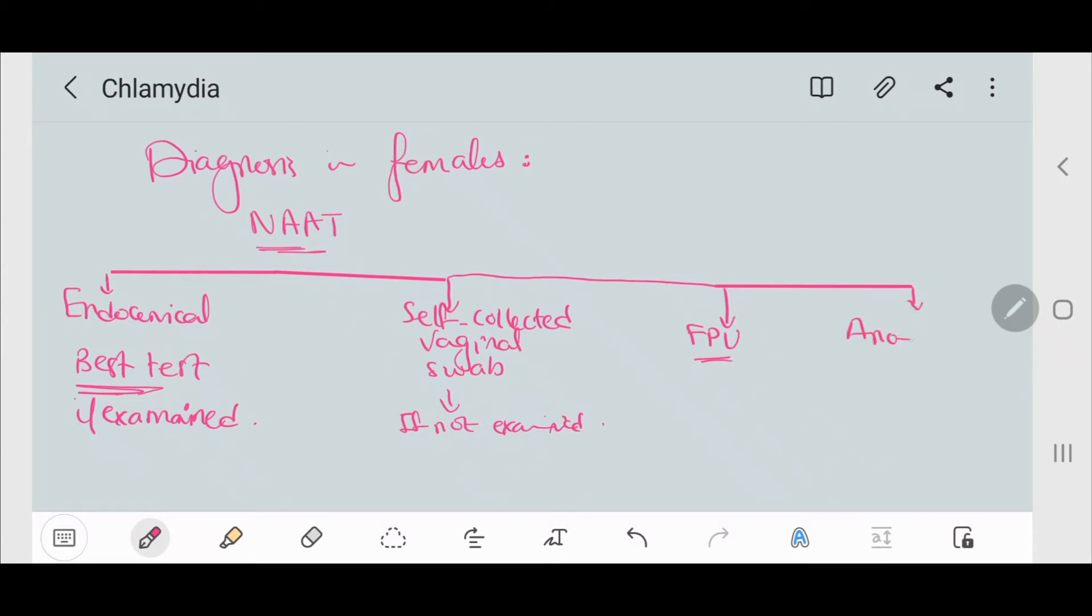The last way is the anorectal swab. If the patient has had anal sex or has anorectal symptoms, that's when we order anorectal swabs. And if the patient declines anal examination, instruct self-collection or refer patient for testing to sexual health center.